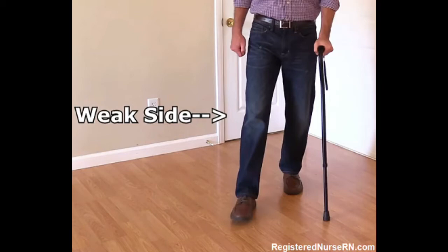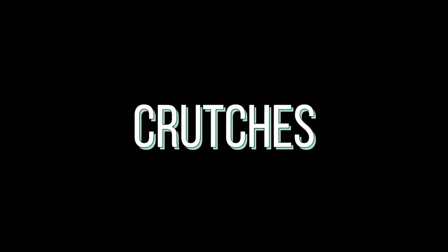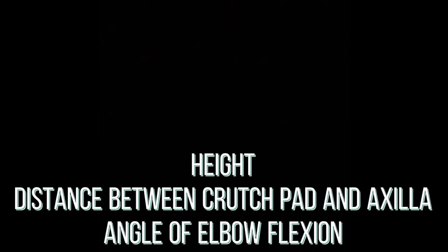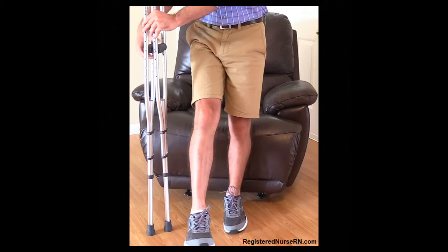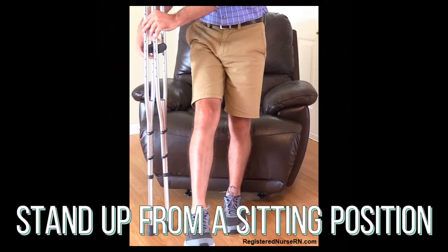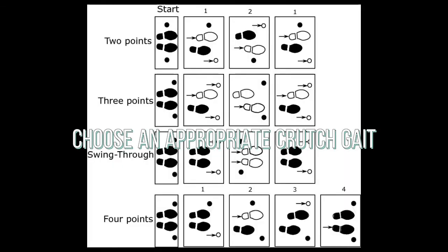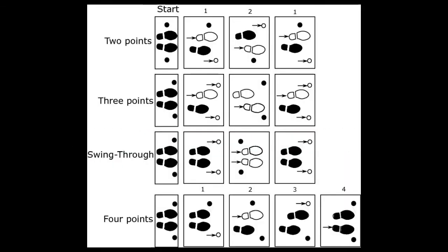For the crutches, crutch measurement includes three areas: the client's height, the distance between the crutch pad and axilla, and the angle of elbow flexion. To use crutches, the client supports themselves with their hands and arms. Have the client stand up from a sitting position, then choose an appropriate crutch gait. The gait options include two-point gait, three-point gait, swing-through gait, and four-point gait.